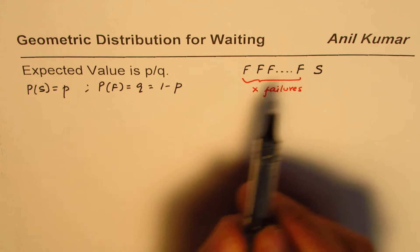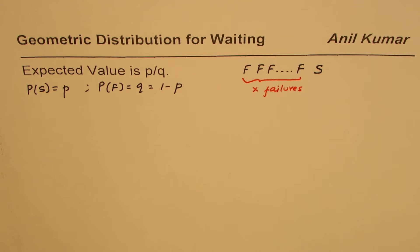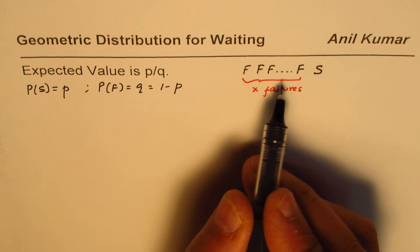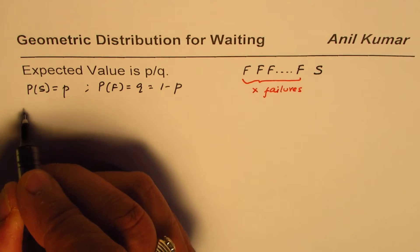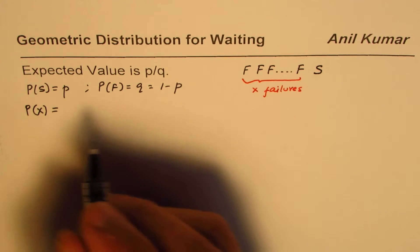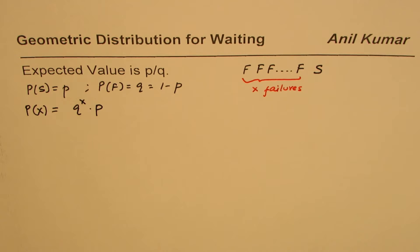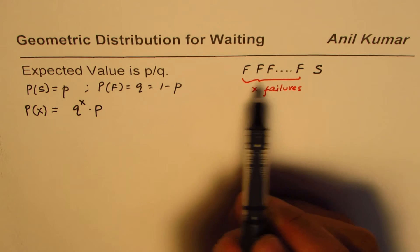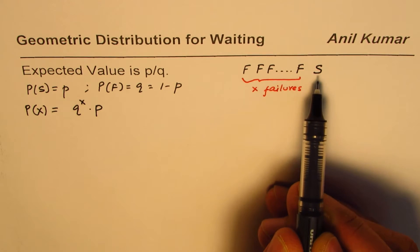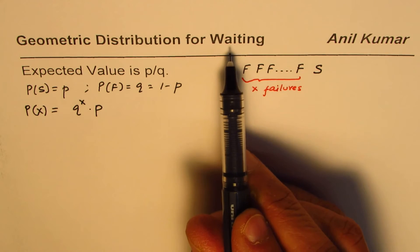We are taking Bernoulli trials, so all events are independent with only two outcomes — success or failure — and the probability remains the same. Since they are independent events, their probabilities can be multiplied. Therefore the probability for this geometric distribution is Q to the power of X times P, where X is the number of failures. Note that X is not the total number of trials; the total number of trials is X plus 1.